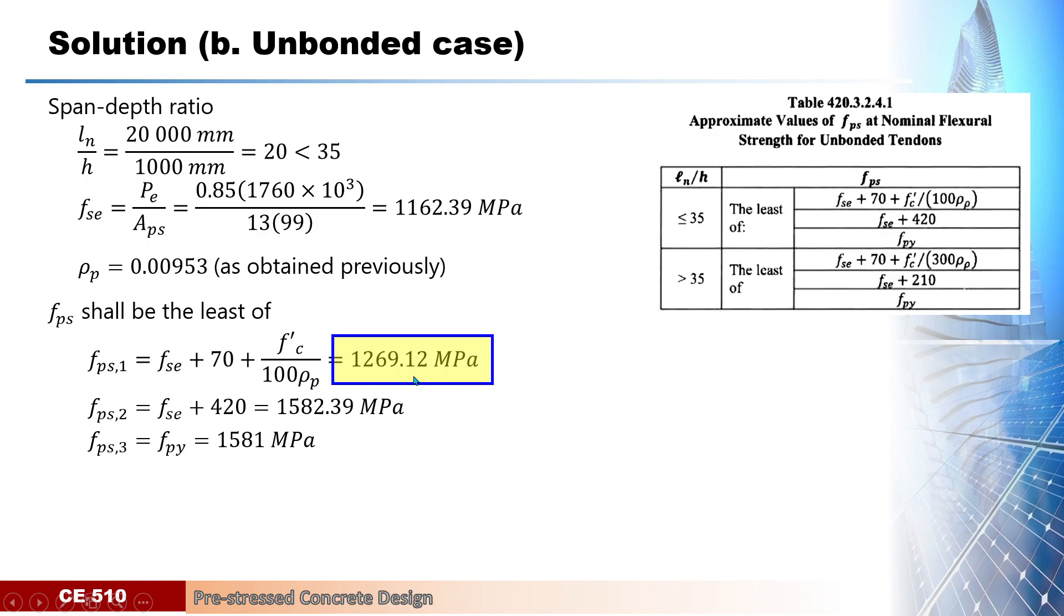Using these values to determine now the ultimate moment capacity of the beam, we need to determine first the a, that is the depth of the concrete compression block, assuming now that this will be a flange section which was already proven in the first part, letter A for bonded tendons.